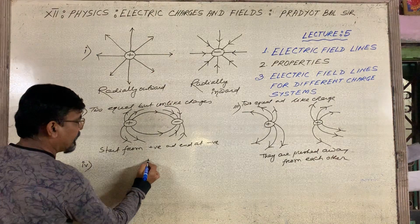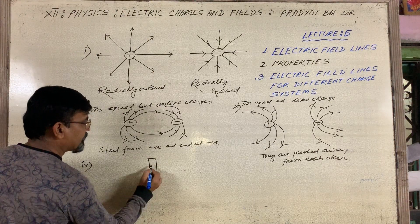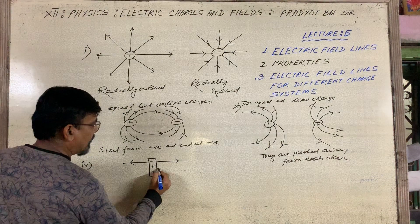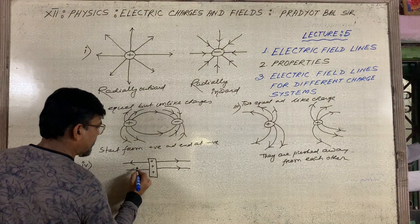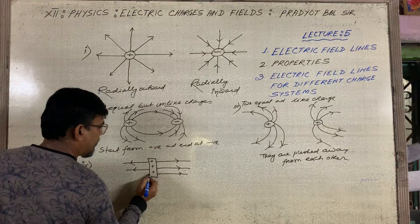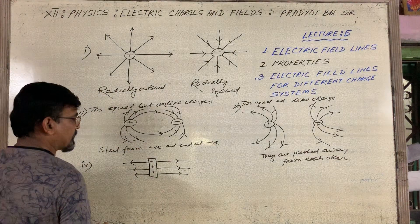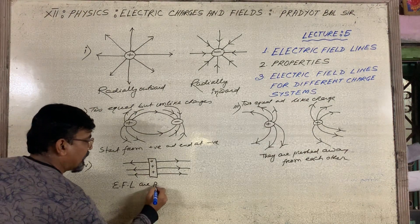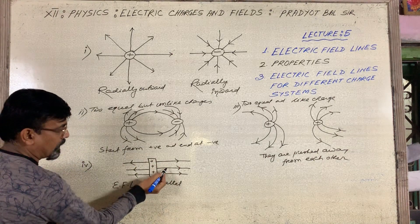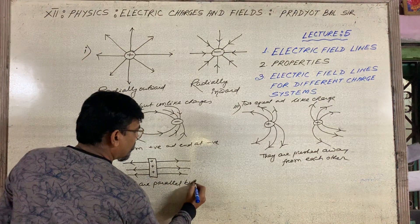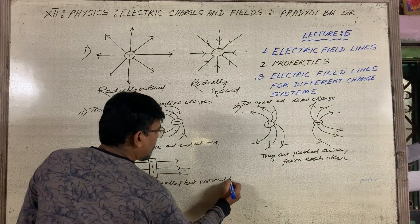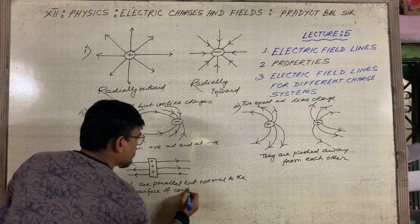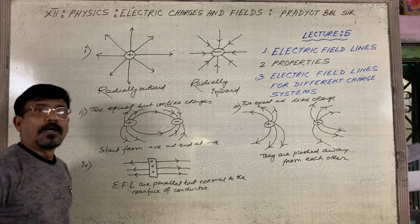If I take a charged conductor — for example a flat conductor — the electric field lines will be parallel to each other. These are parallel lines, but they are also normal to the surface of the conductor. So electric field lines are parallel and normal to the surface of the conductor.